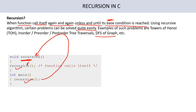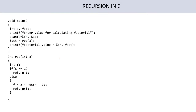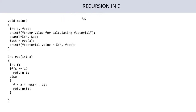Now I'll show you how to calculate the factorial of a number using recursion. What is factorial? If you want to calculate the factorial of 4: 4 × 3 × 2 × 1 = 24. This program will calculate the factorial by using recursion.